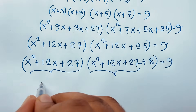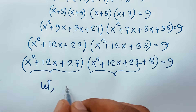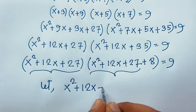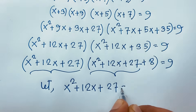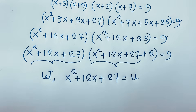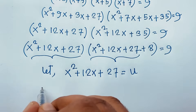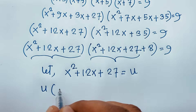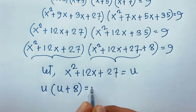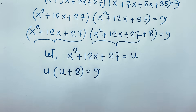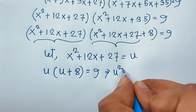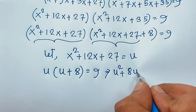Let u = x² + 12x + 27. Then the equation becomes u times (u + 8) = 9, which expands to u² + 8u = 9.